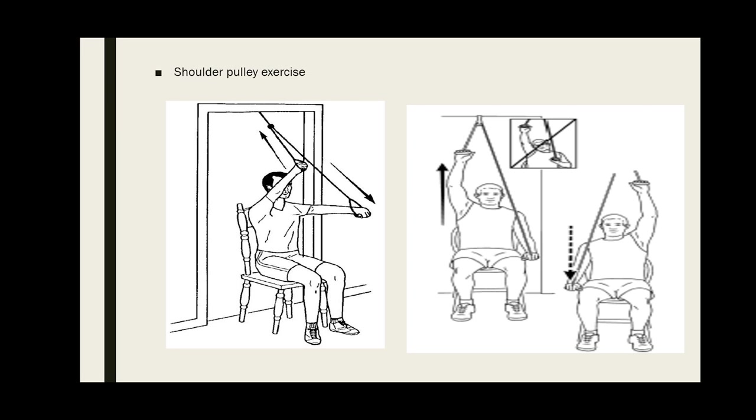Now shoulder abduction: in the same position, abduct your arm to the side. Stretch your arms to the side. First stretch one arm up, hold for a few seconds, then switch to the other side and do the same.